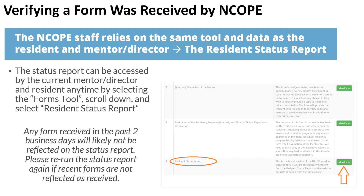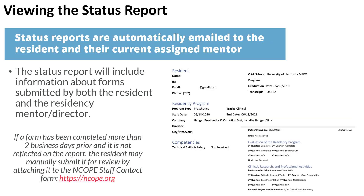A question often asked, especially towards the end of residency, is whether an individual can verify that a form was truly received by the ENCOPE staff. The ENCOPE staff relies on the same tool and data as the resident and mentor/director — the Resident Status Report. This report can be accessed by the current mentor, director, or resident at any time by selecting the Forms tool and scrolling down to select Resident Status Report. Do remember, any form received in the past two business days will likely not yet be reflected, so please rerun the status report if recent forms are not shown.